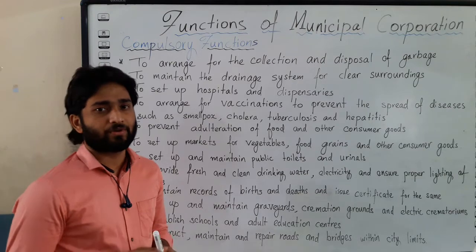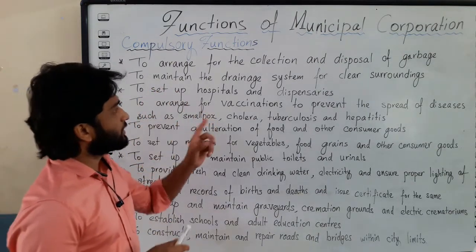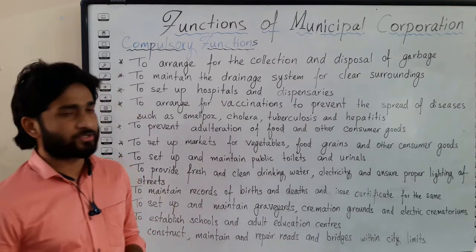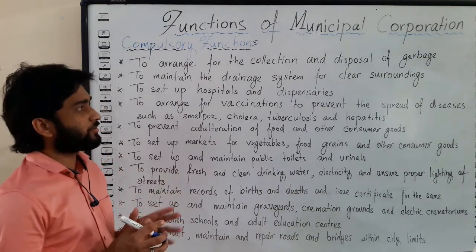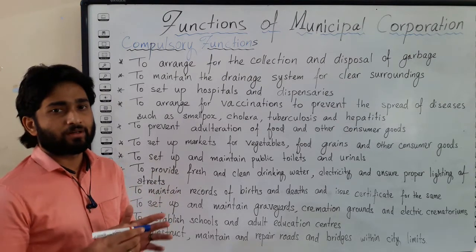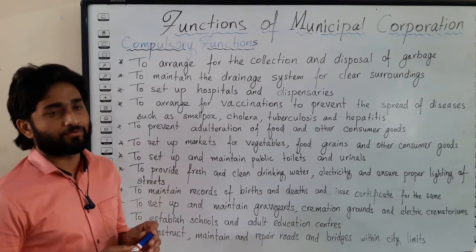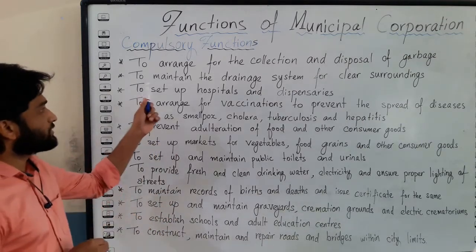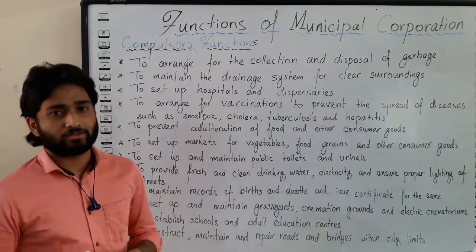The first compulsory function is to arrange for the collection and disposal of garbage — collecting waste materials and disposing of them. This is a core function of the corporation. The next compulsory function is to maintain the drainage system for clean surroundings.